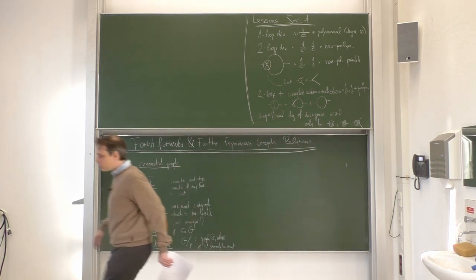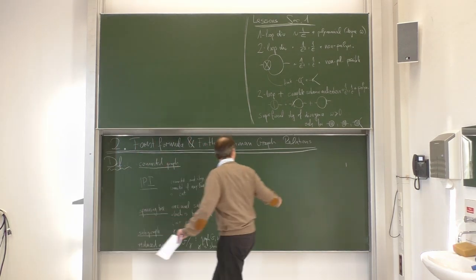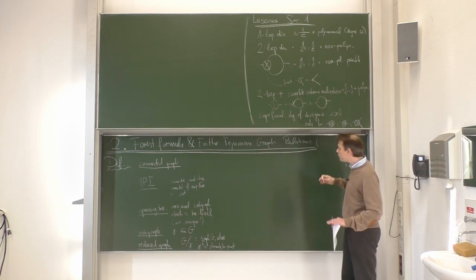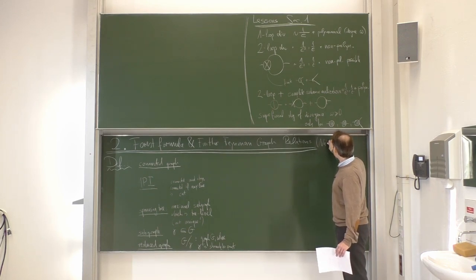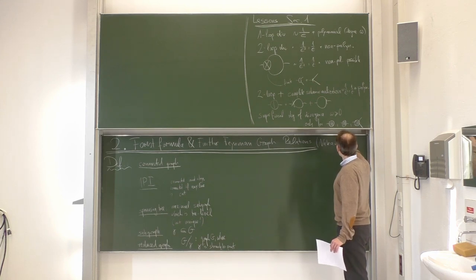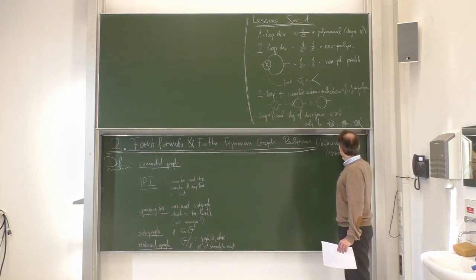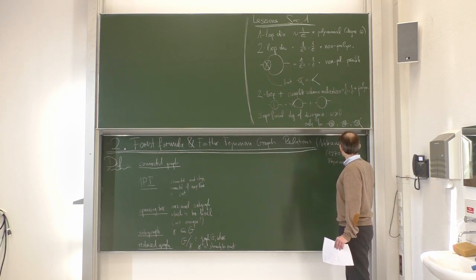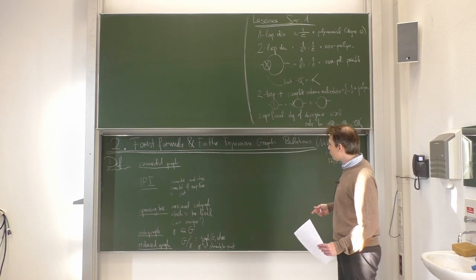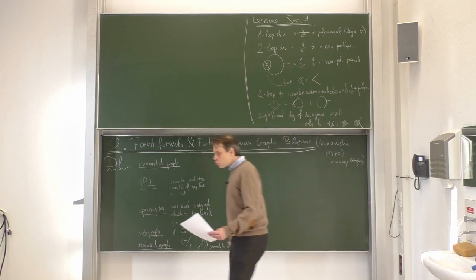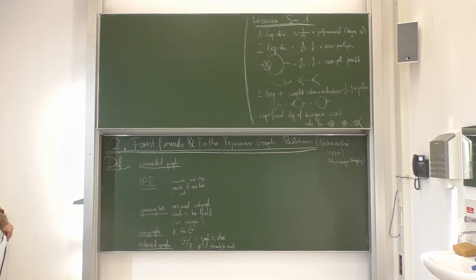There is one reference where you can find a lot of explicit proofs with mathematical formalism in graph theory language. This is a book by Nakanishi, from 1970, on Feynman graphs. It contains the associated Feynman graph proofs, but I think it is really sufficient to prove them by looking at typical examples.